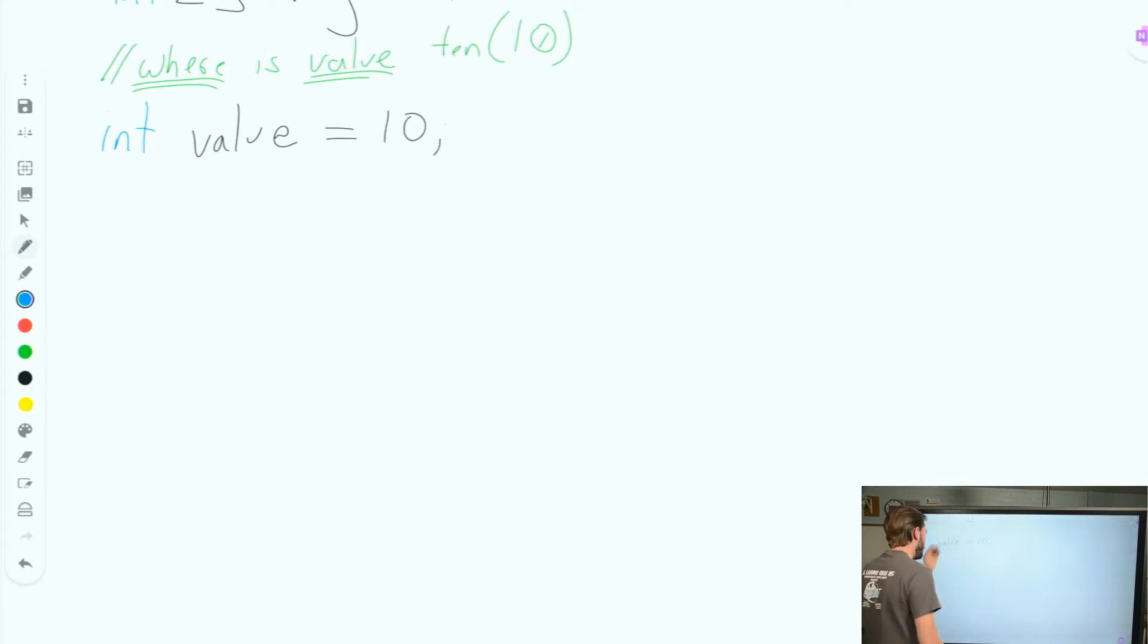We're also going to write another integer that is going to let us know where that thing is. So we're going to write integer and we'll call it where. And we're going to give it a value of negative 1 because there's no index of negative 1. So if we have a negative 1 at the end of searching, we know that we haven't found this thing and we can do something.